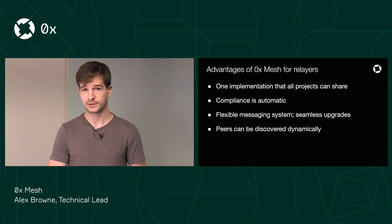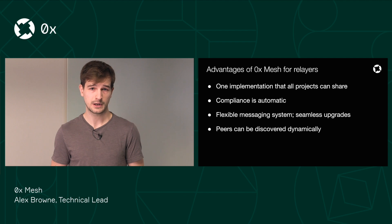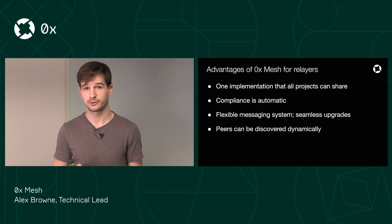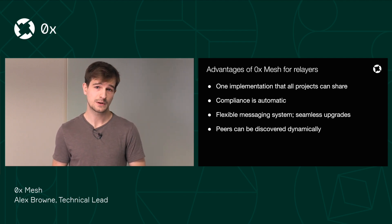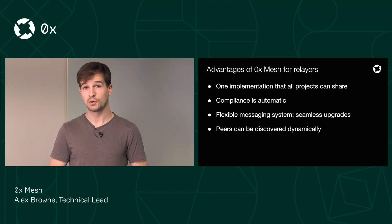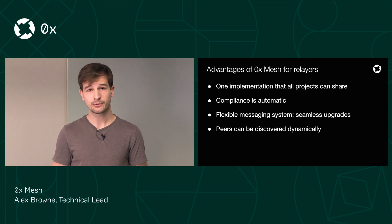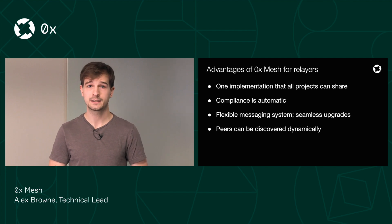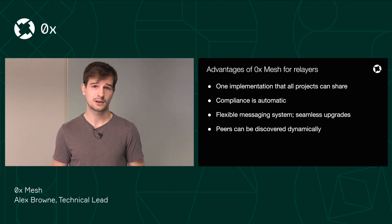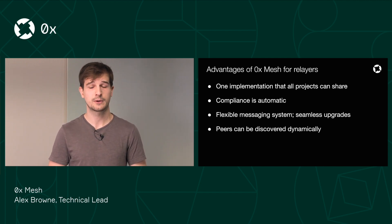0xMesh uses a flexible messaging system, which will be much easier to upgrade to support new token standards or new order formats. And since everybody's running the same code, doing these upgrades is a lot more seamless. Most importantly, 0xMesh features automatic peer discovery. So for relayers that want to share orders with one another, you don't have to know all the identities ahead of time. When a new relayer spins up and they're connected to the mesh network, they will automatically be sharing their orders with other relayers and receiving orders from them.